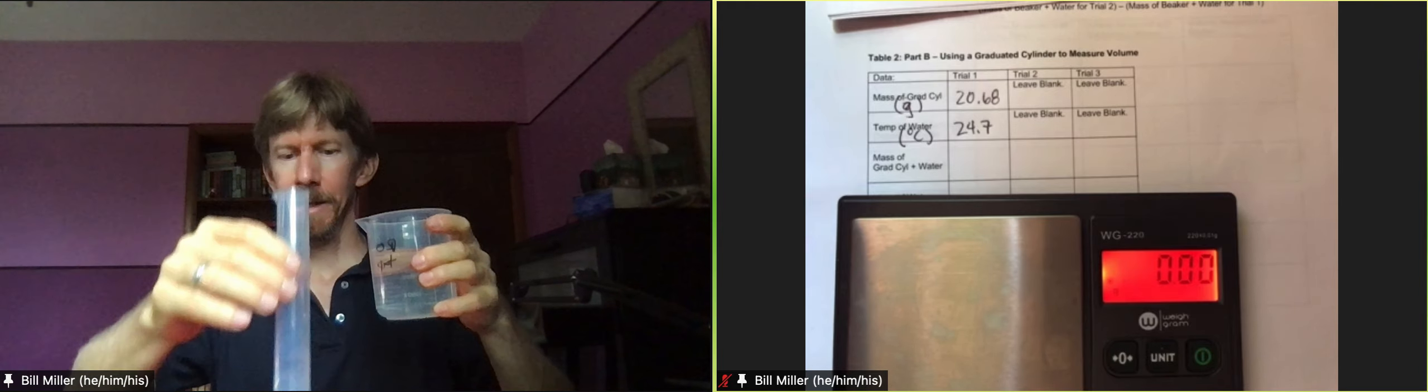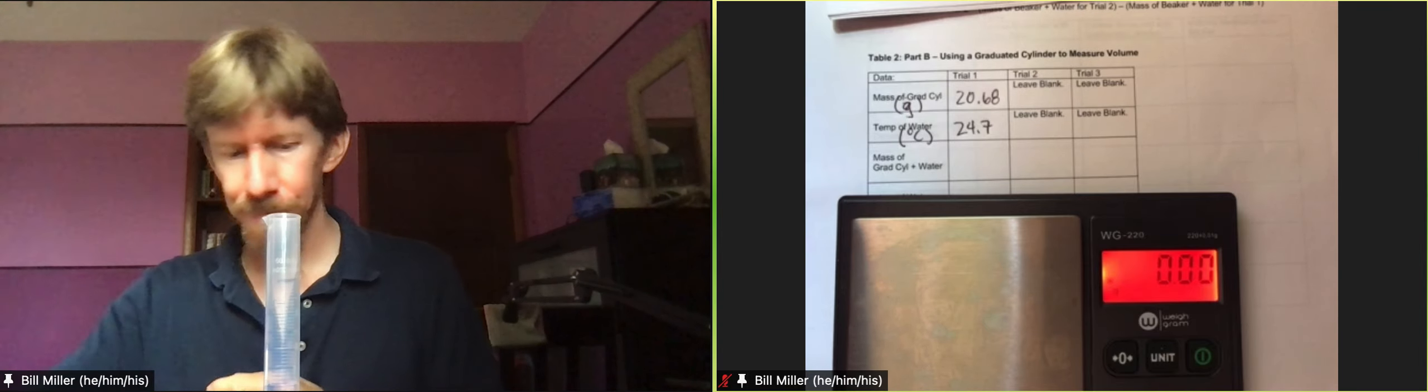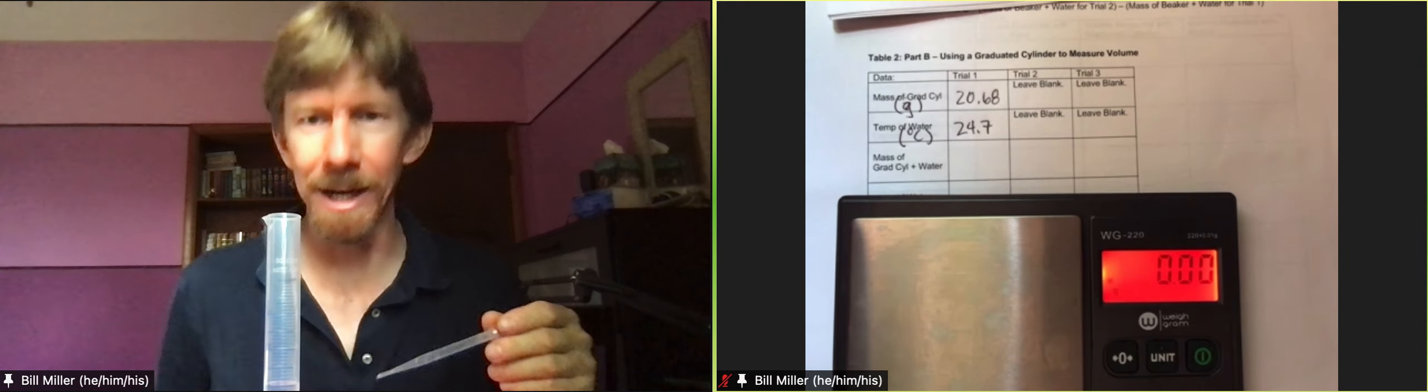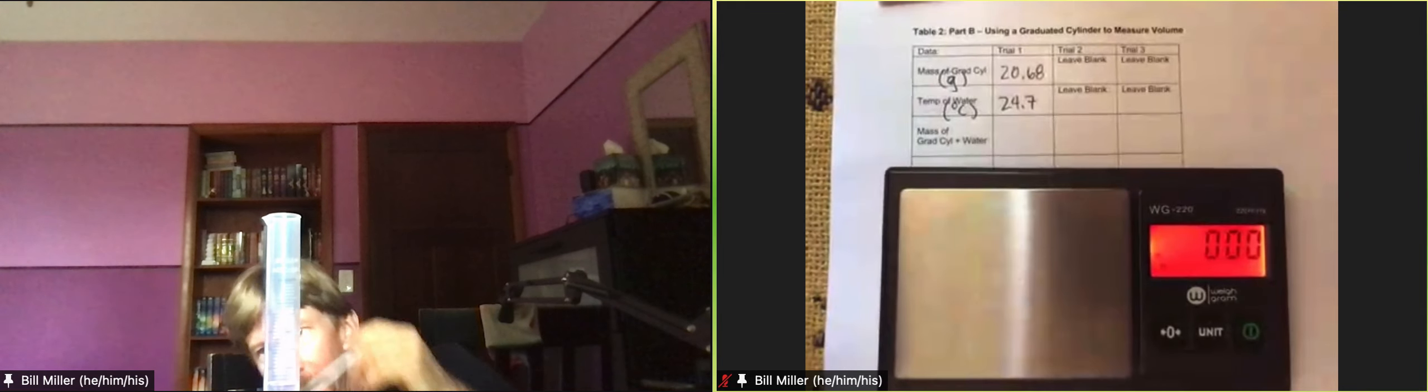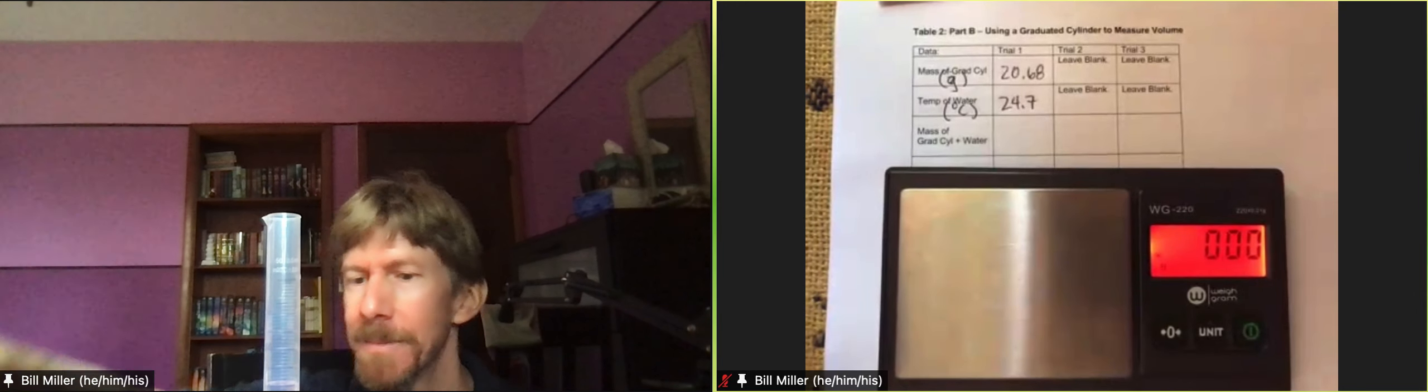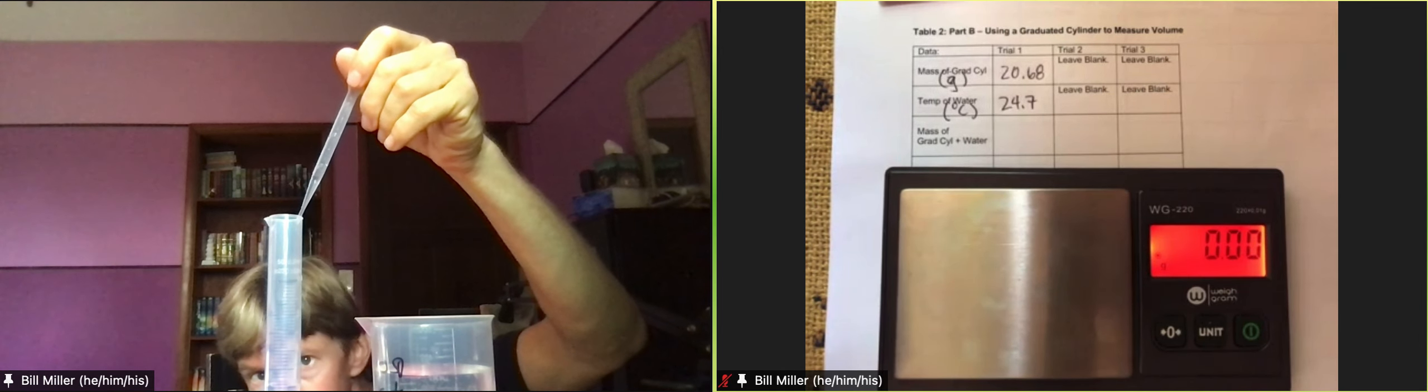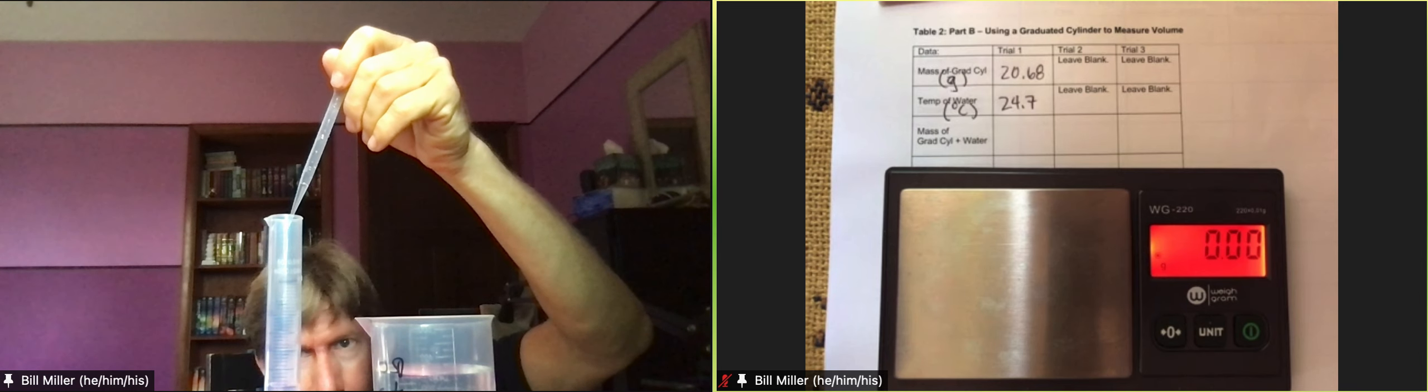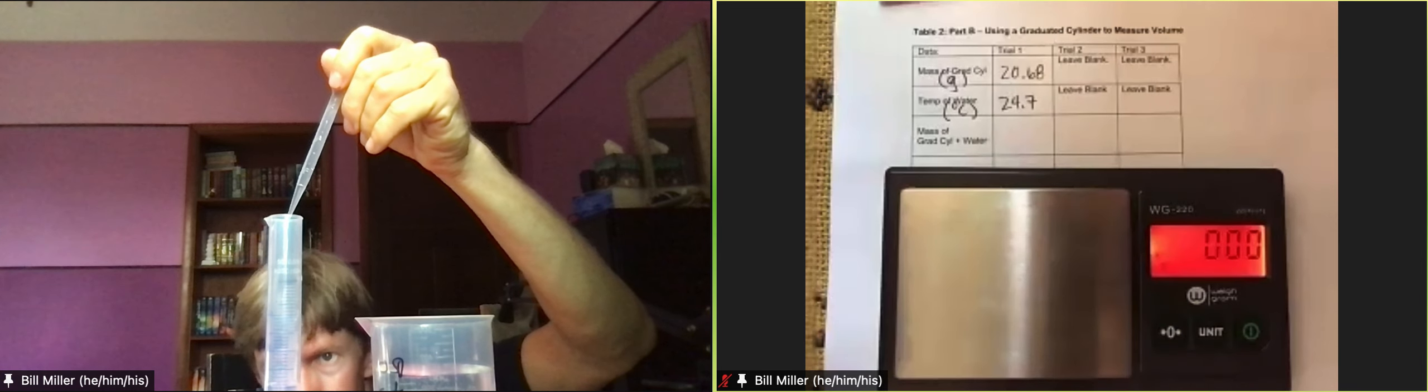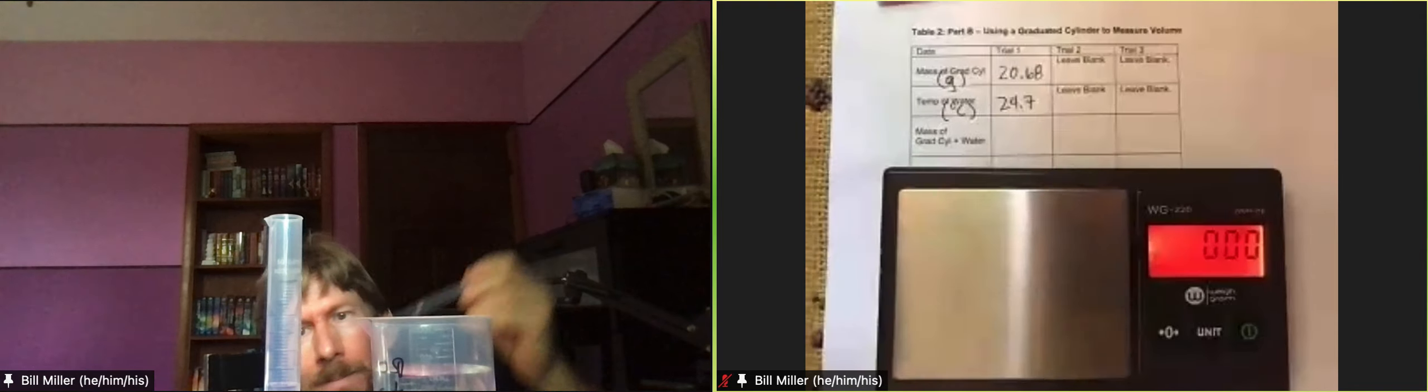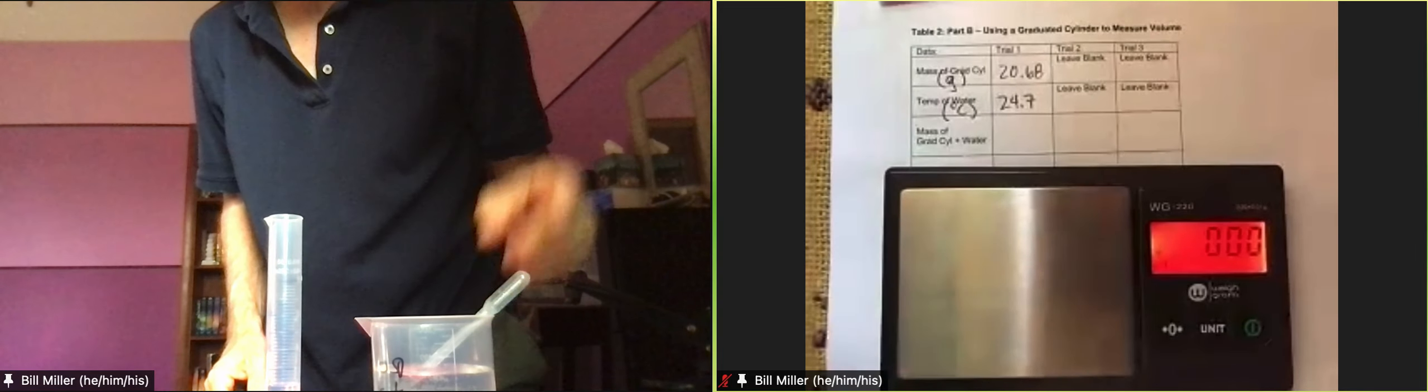What I'm going to do is use droplets to get it exactly to 20, and you want to look straight across at the 20 line to line it up exactly. So mine is a little below the 20 line, so I'm going to get it right at the 20 line, and I'm just going to leave my pipette in my water there.